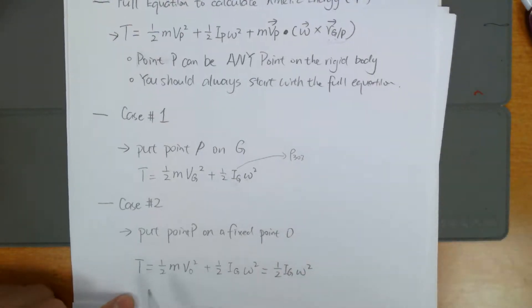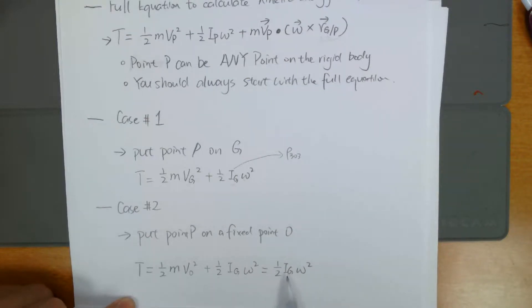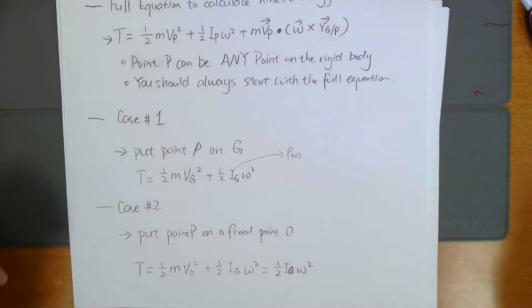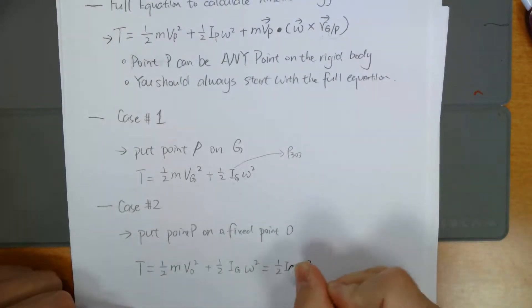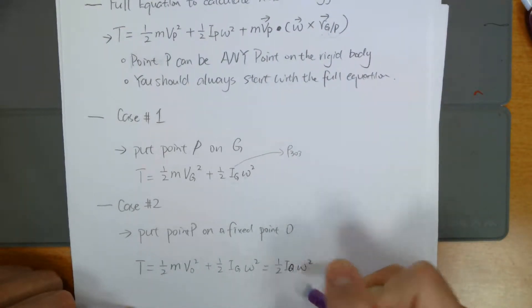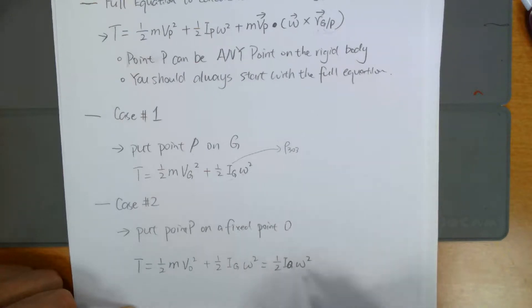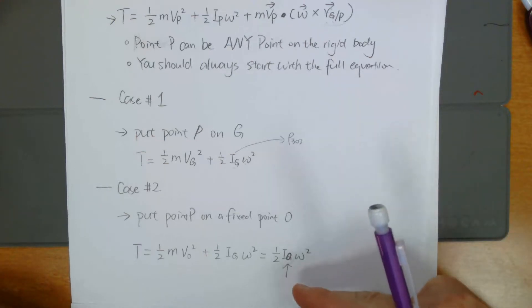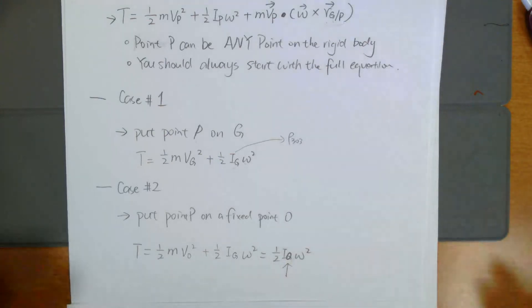So the equation is much shorter. T equals one-half IO omega squared. And the equation is shorter, but you need to solve what is IO because that point O may not necessarily be the center of mass. And you need to use either parallel axis theorem or other method to find what is IO.